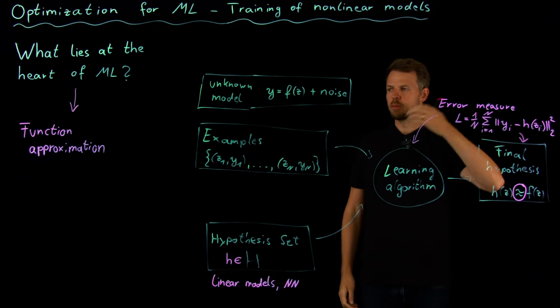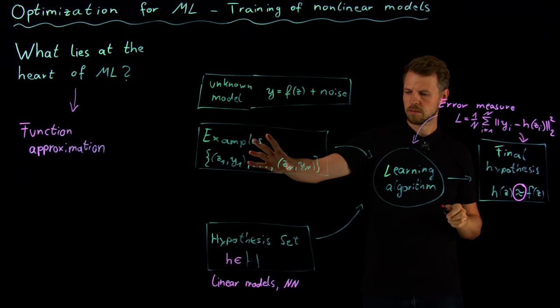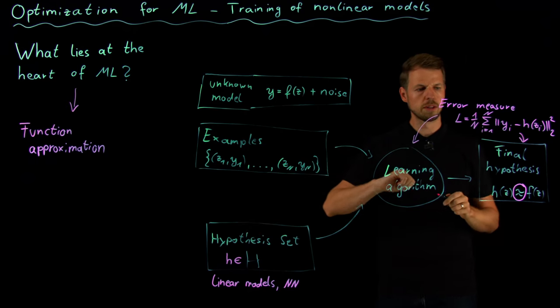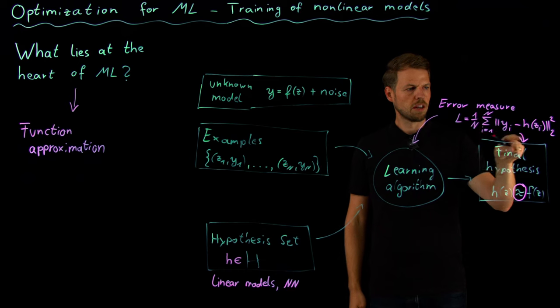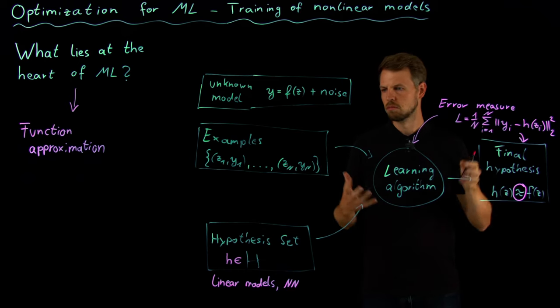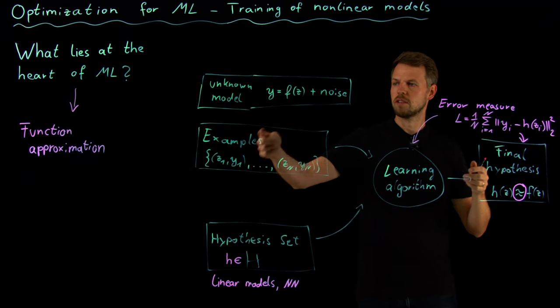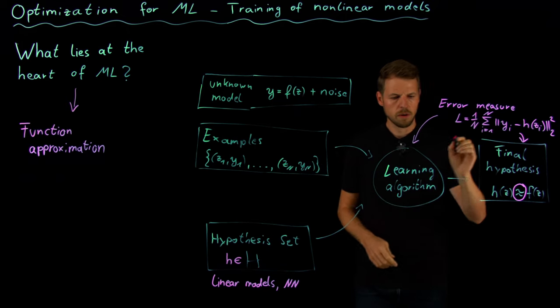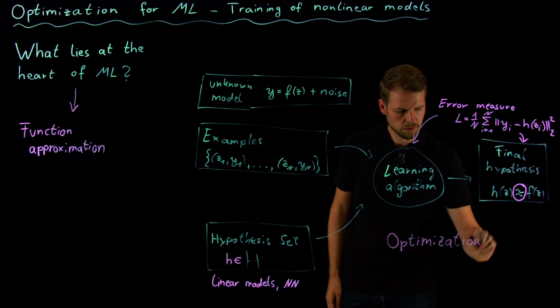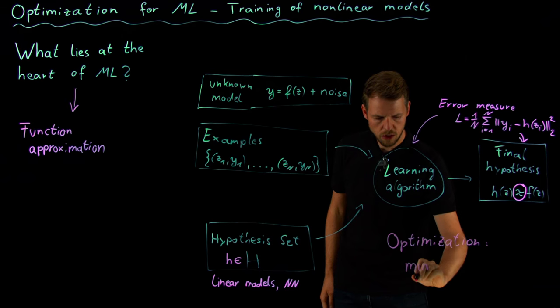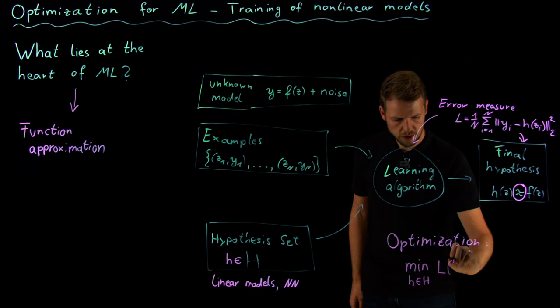Now we are at this overview and here you see where optimization is important. We have this error measure and here is where optimization comes into place. We have data, we have decided on a hypothesis set—say the class of all linear models maybe—and we have defined an error measure, I have denoted it by L here because it's what we call a loss function in learning. If we minimize this loss function, then we have a good hope that at least on our examples we have good performance. The optimization part is now to optimize over all my possible hypotheses this loss function L, which now is a function of my model h.